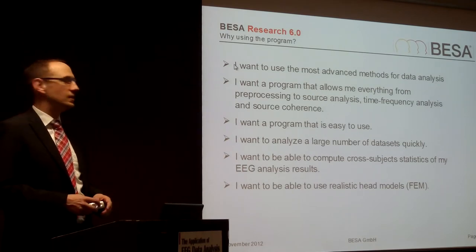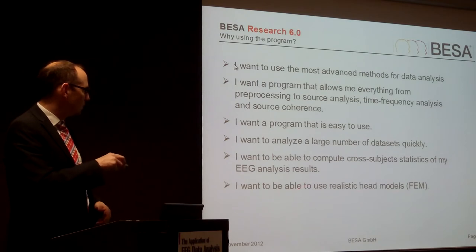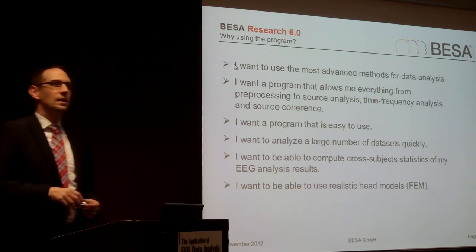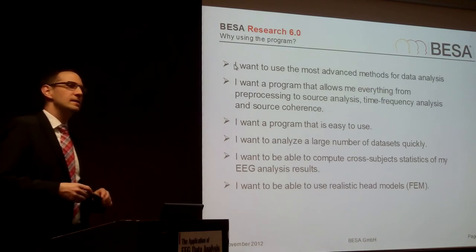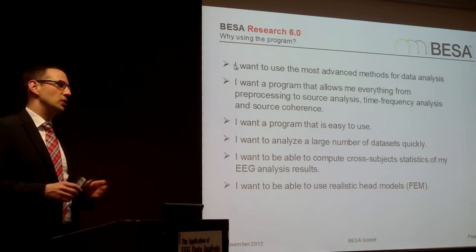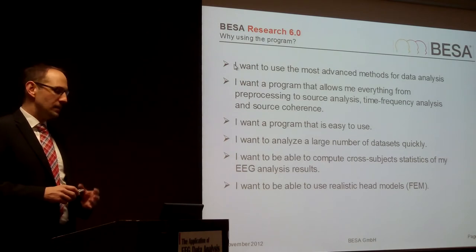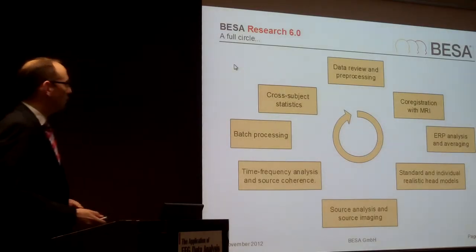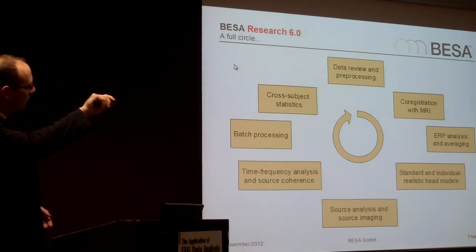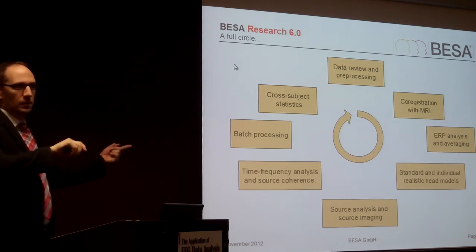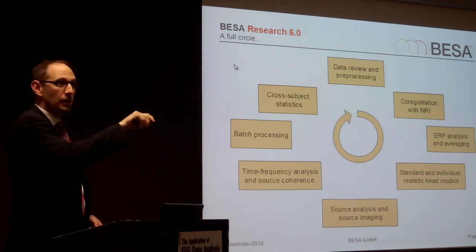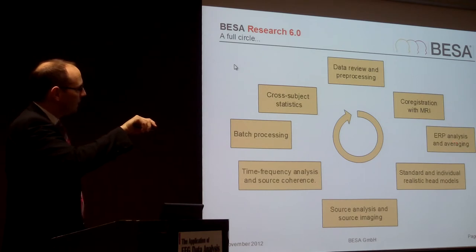Peer review will not be successful without statistics. I also want to be able to use realistic head models, like a FEM model. This is a very crucial point — if you use the individual anatomy of a patient or subject, source localization gets more robust and the results get more precise. So basically we do the complete circle: from data review and pre-processing to co-registration with MRI, if you have the individual MRI — though this step is not mandatory, it depends on your equipment.